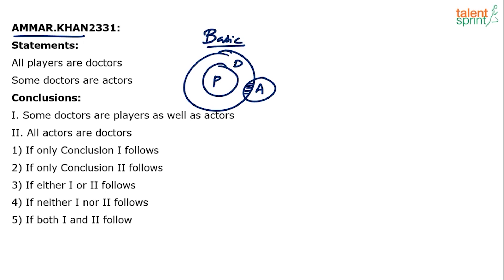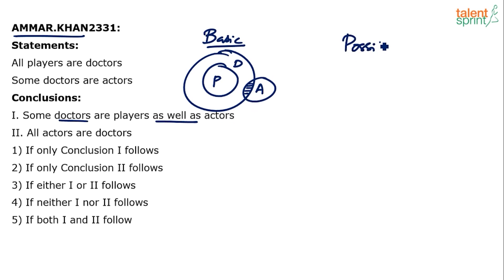Now look at the conclusion. The first conclusion: some doctors are players as well as actors. There are some doctors which are players and also actors. Is it true? Look at the diagram. Do you find any doctor which is both player and actor? It is possible, but is it always true? No. In the basic diagram itself it fails. Conclusion number one fails because it says some doctors are players as well as actors.